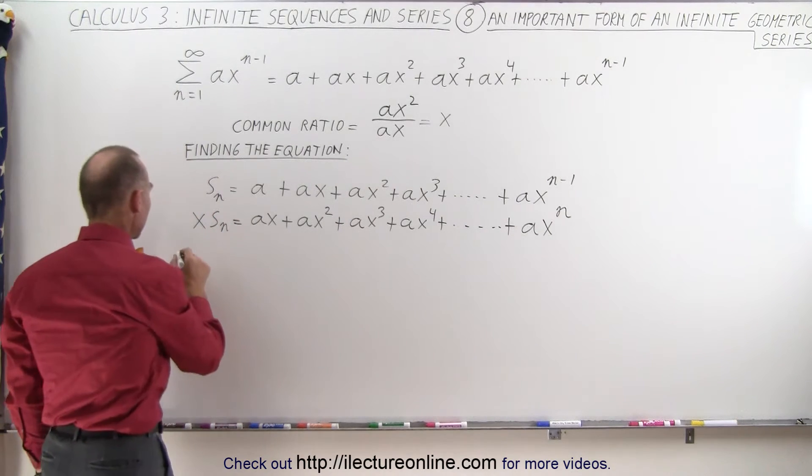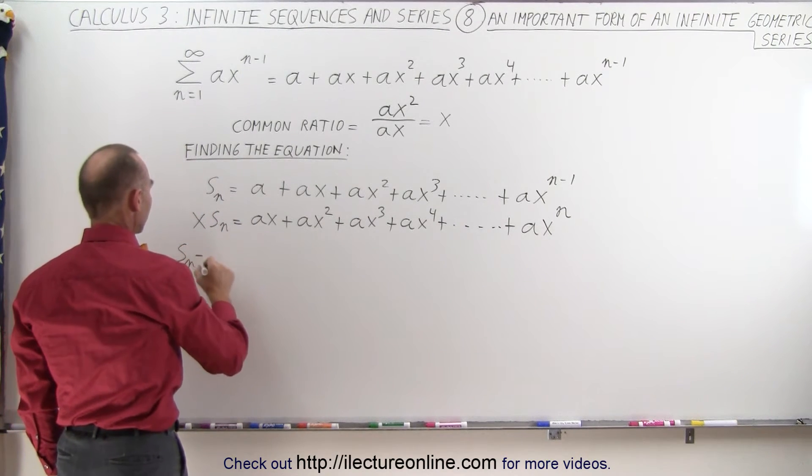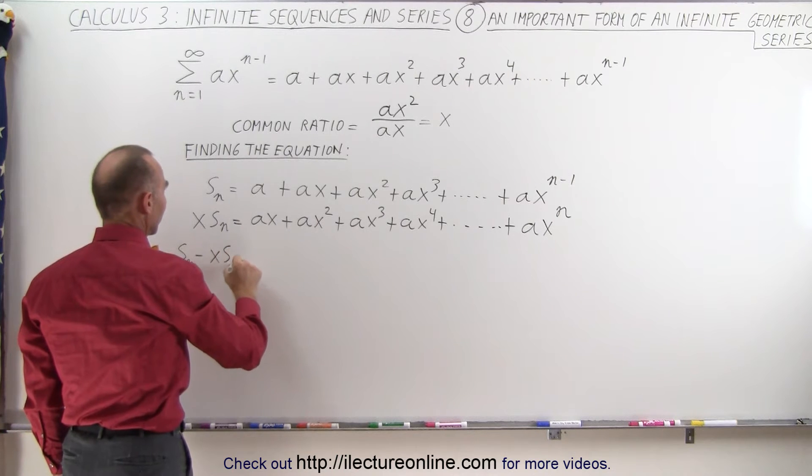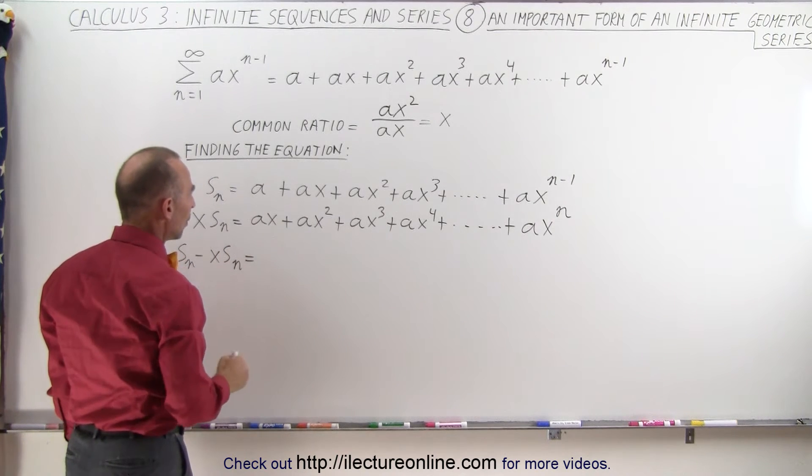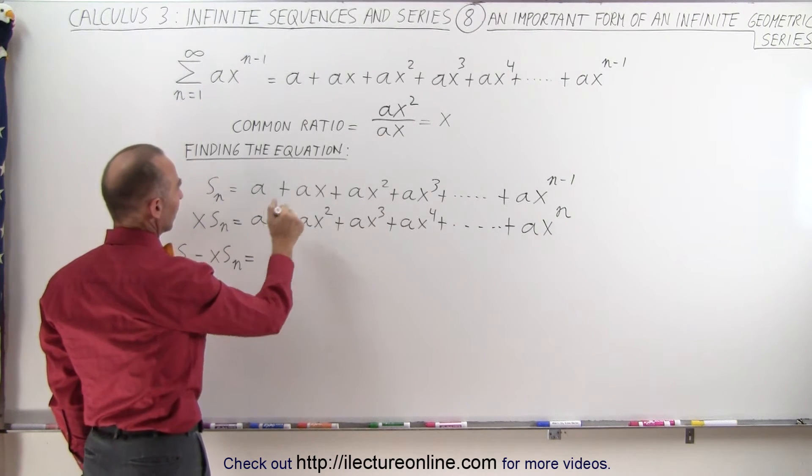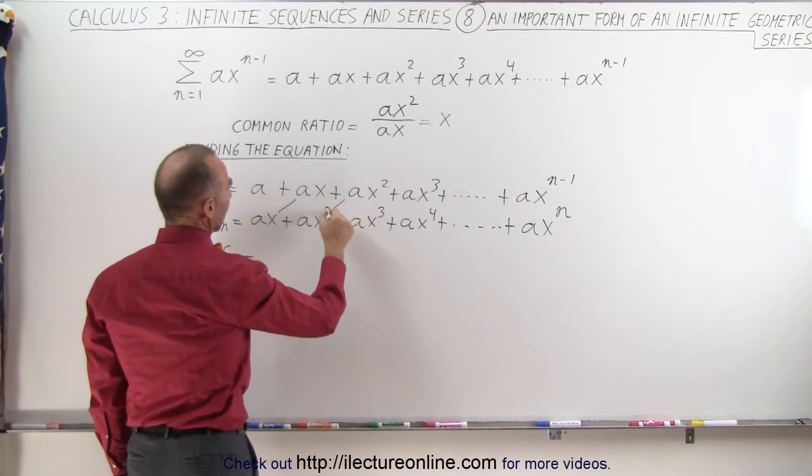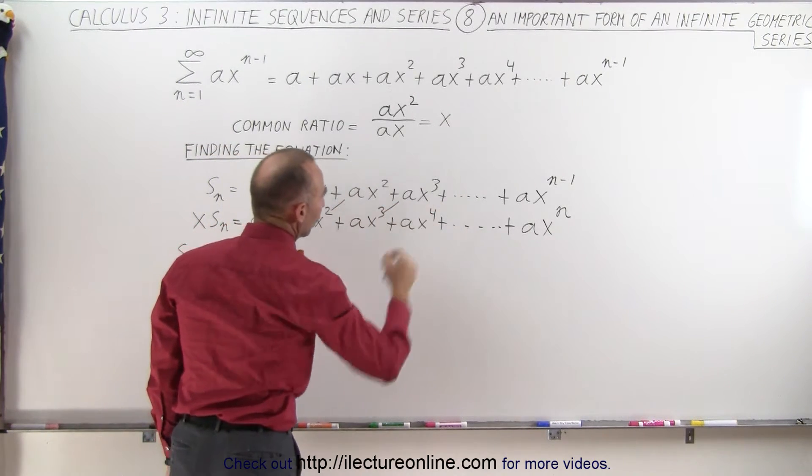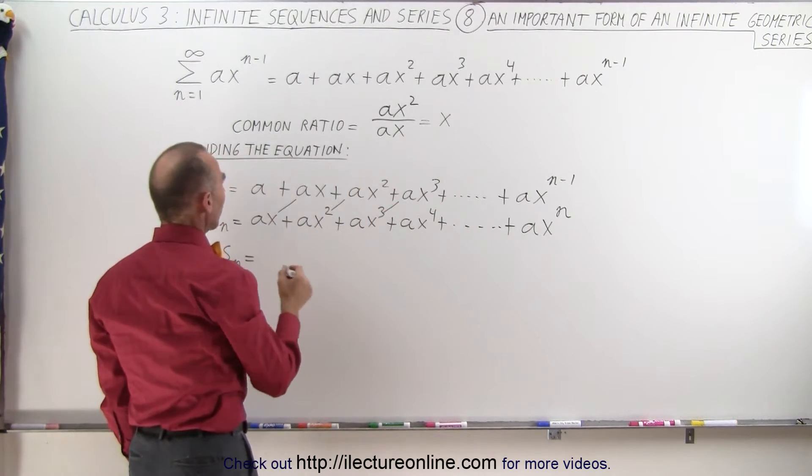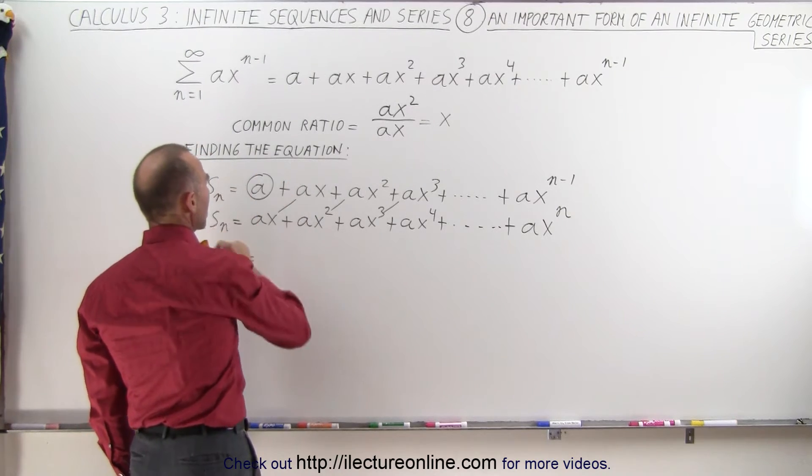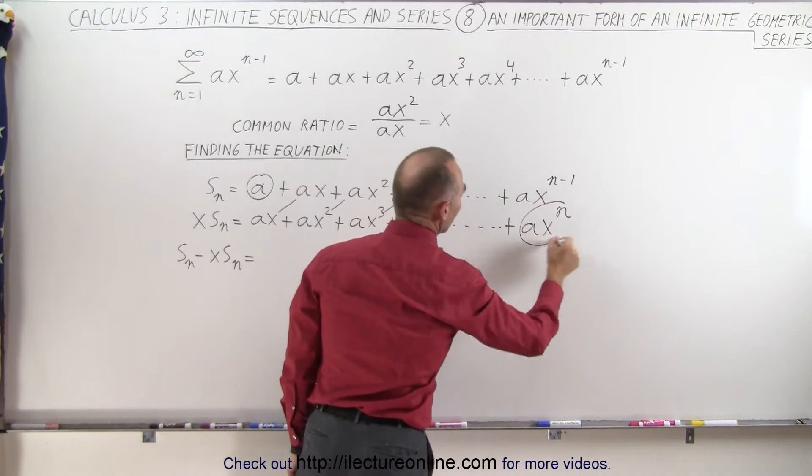Now if we take s sub n and subtract from that x times s sub n, what do we get? Well, notice most of the terms are common, ax is common, ax squared, ax cubed, and so forth. The only term that's not common is this term right here and this term right here.